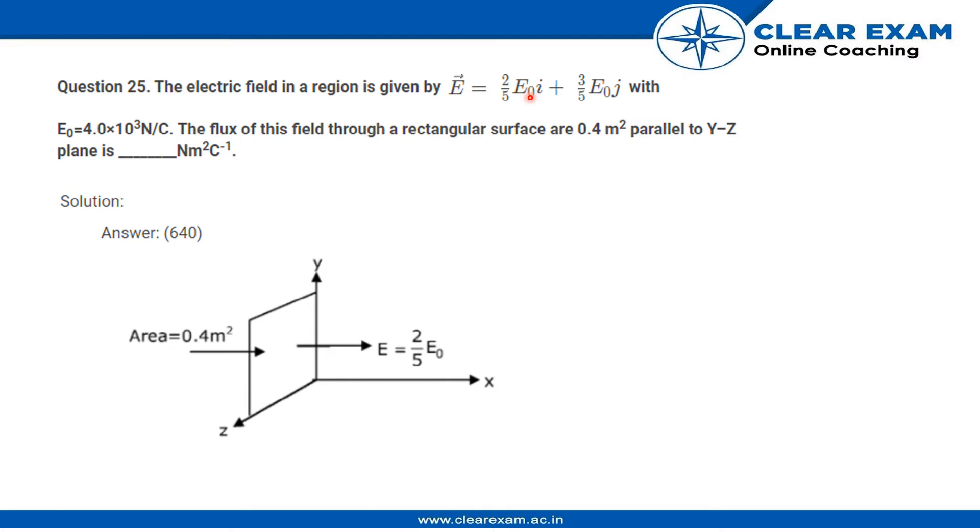The electric field has two components: i cap and j cap. The i cap component, that is the x component, will be the only component useful here. The flux will come from the negative x direction, enter through this rectangular sheet, and then pass through positive x direction.